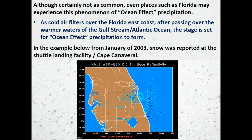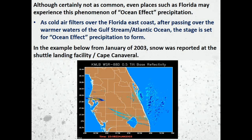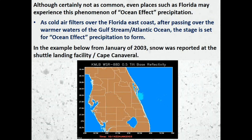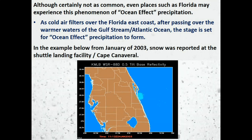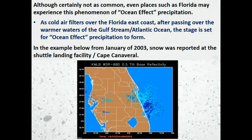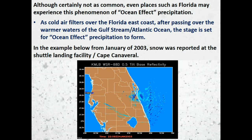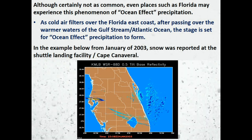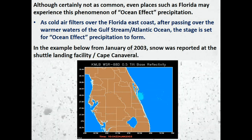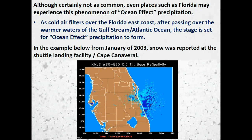A few people may experience this phenomenon of ocean effect precipitation. As cold air filters over the Florida east coast after passing over the warmer waters of the Gulf Stream, the stage is now set for ocean effect precipitation to form. In the example below from January of 2003, snow was reported at the Shuttle Landing Facility at Cape Canaveral.